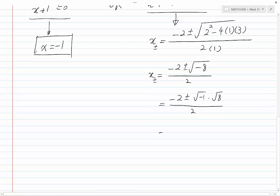which can be further simplified to minus 2 plus or minus j. And for root 8, we can write root 4 times root 2, and the denominator, we have a 2.